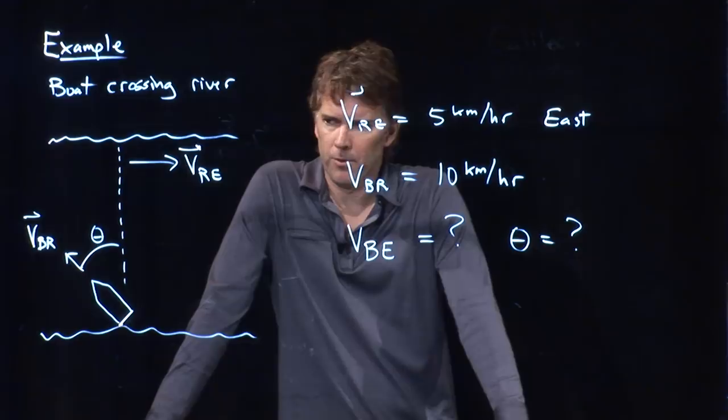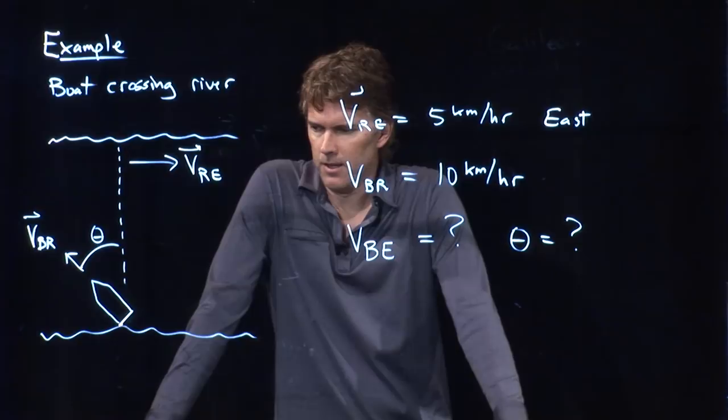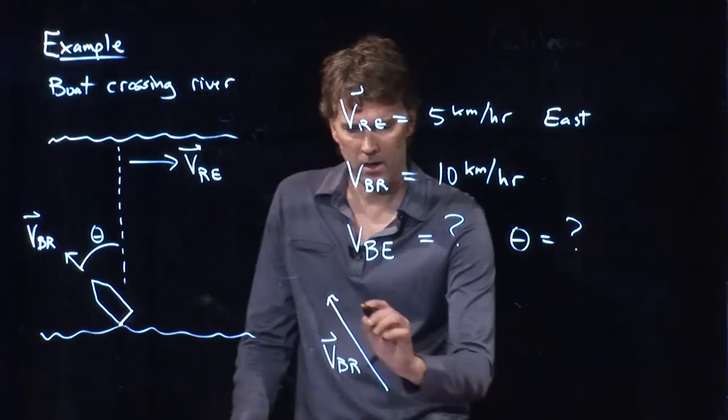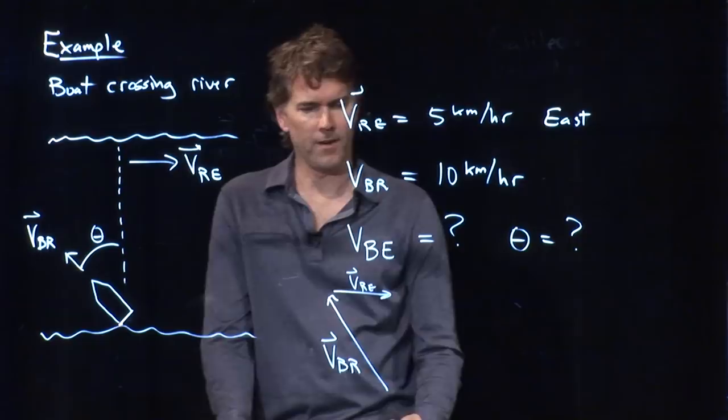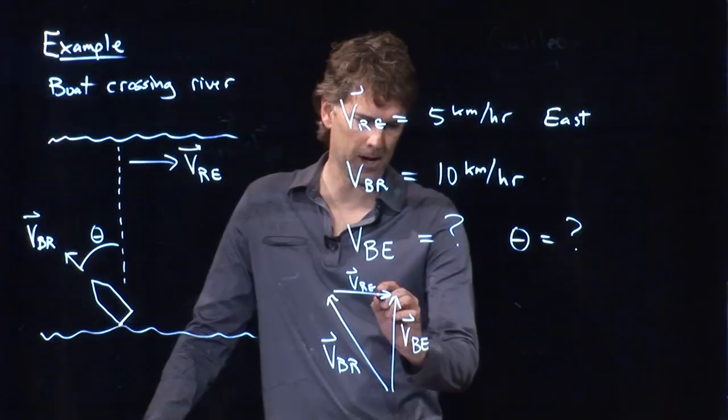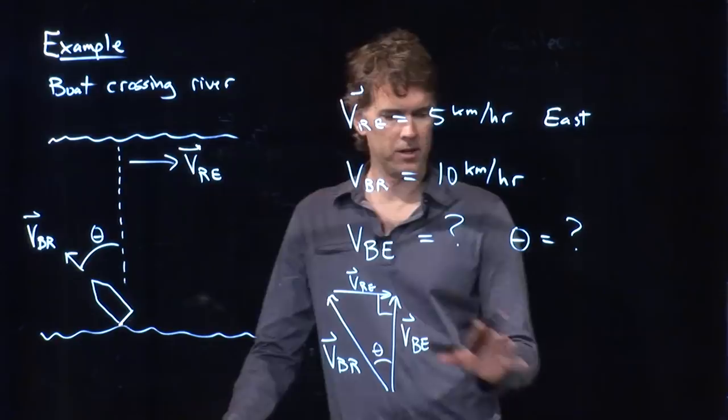Okay, there's a couple different ways to think about this problem. But one way to think about it is the following. We can just draw some vectors. This is the vector of the boat relative to the river. This is the river relative to the earth. And if I add those two up, it looks like I will get the velocity of the boat relative to the earth. This is the right angle. This is our angle theta. And I think that's just about all the information we need.